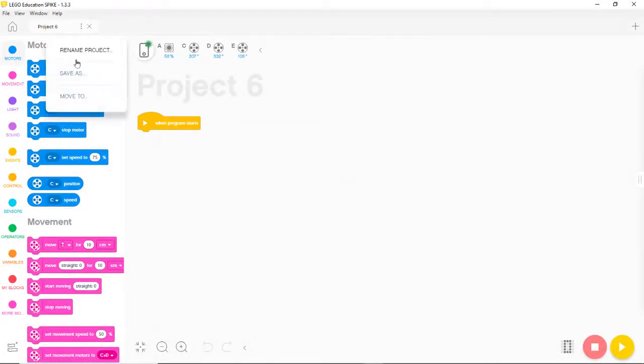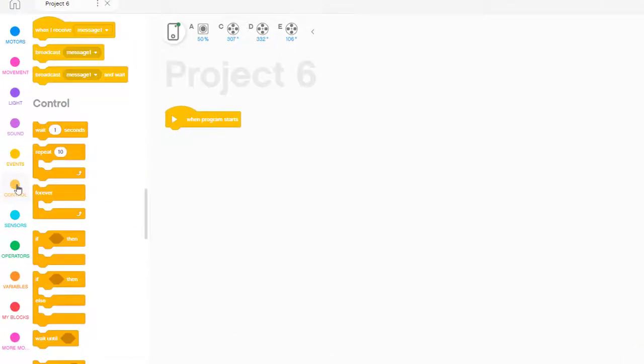Let's create a simple program to learn more about using the sensor in a program. We want the robot to check the color sensor over and over again and let us know when it sees the road. To do this, we start with a control block called forever.